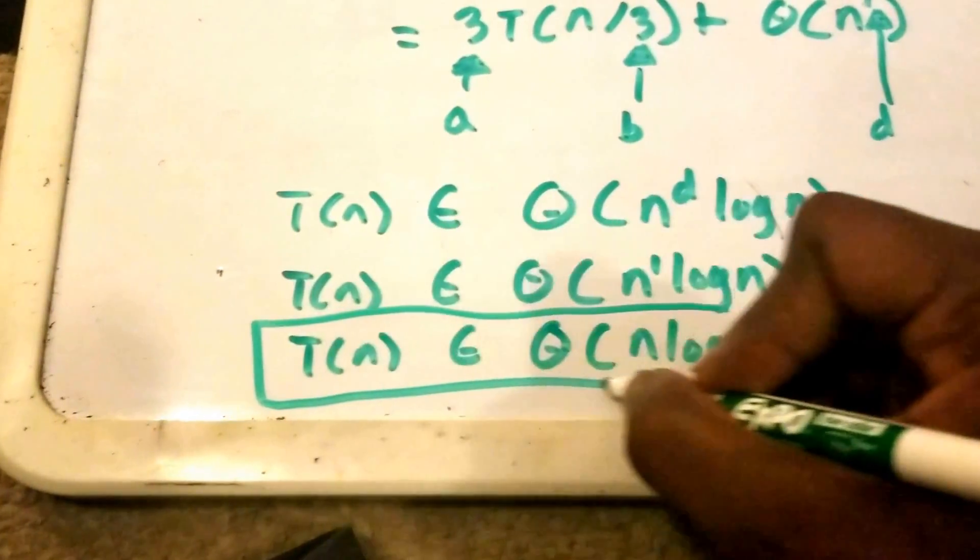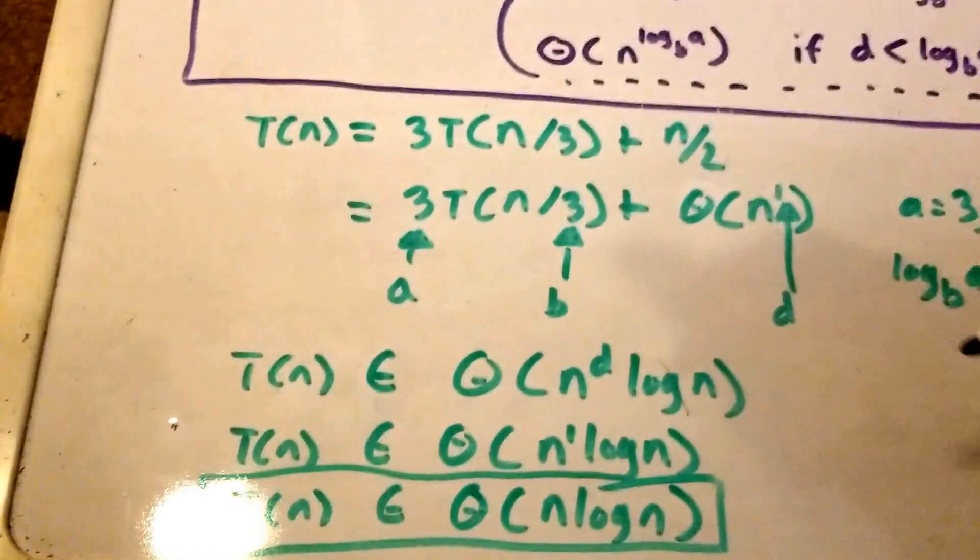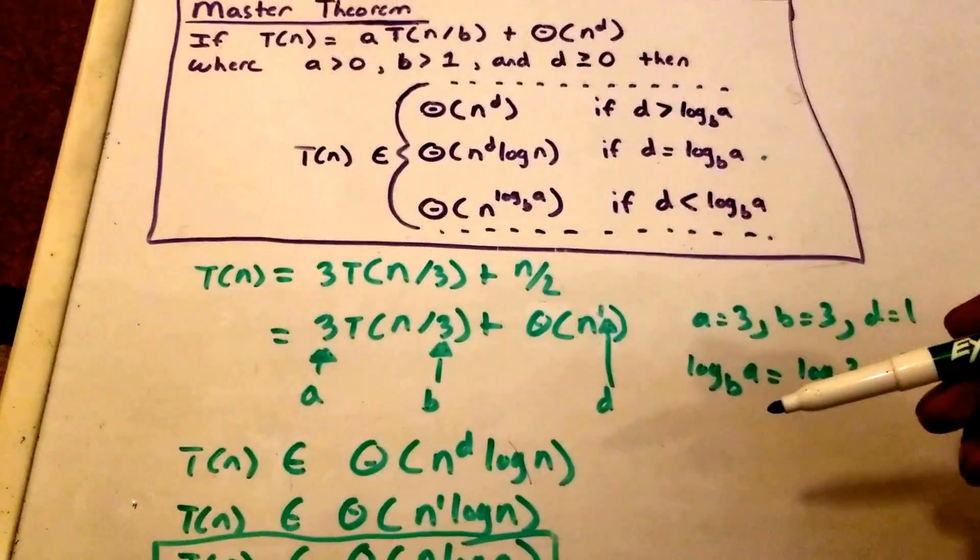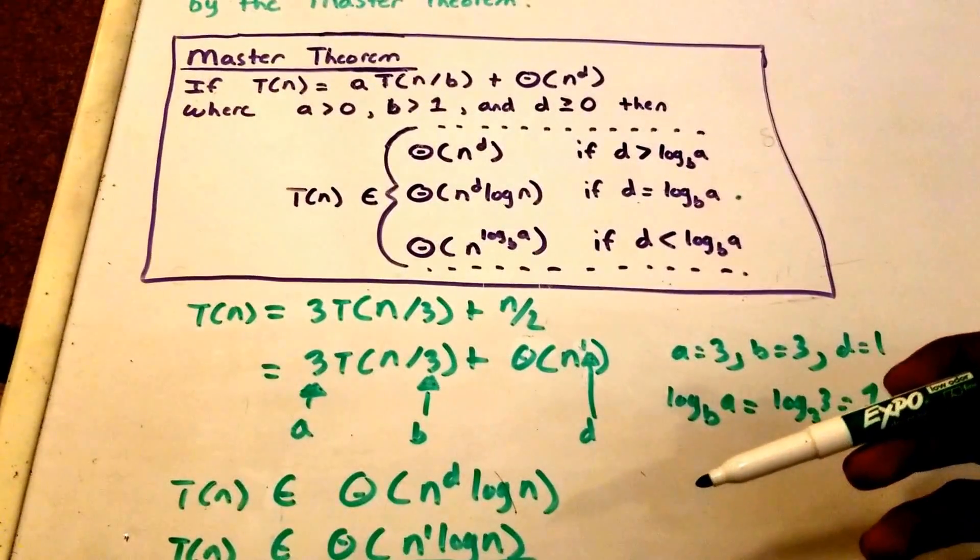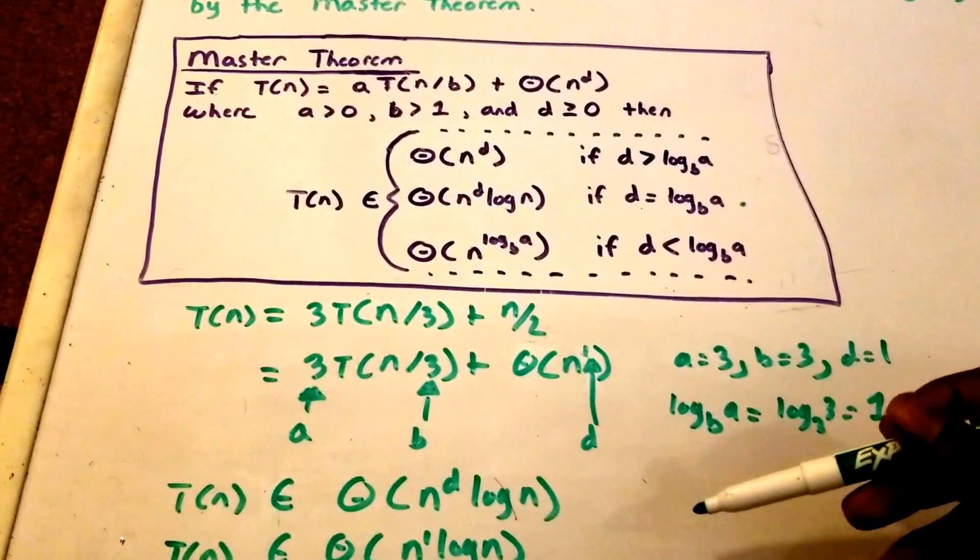And that's basically it. We just proved that T(n) is or belongs to big theta of n times log n.